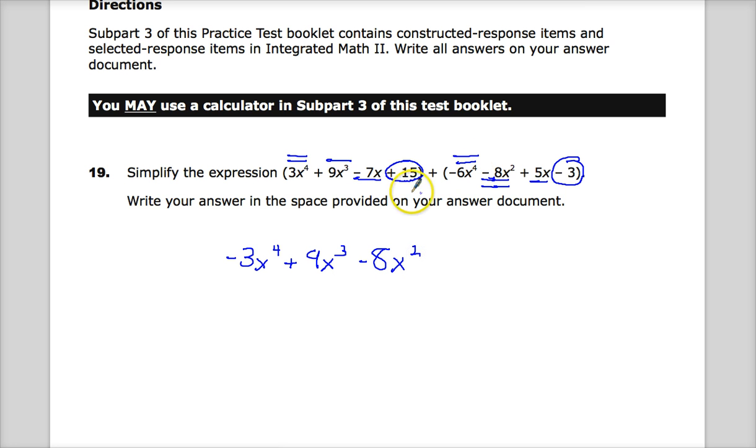For linear terms or x terms, negative 7 plus 5, so I end up with minus 2x. And then 15 minus 3 gives me plus 12. And that's it. That's all you have to do. And they'll also accept other equivalent forms of that.